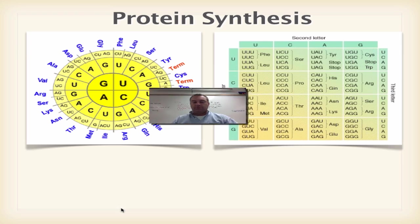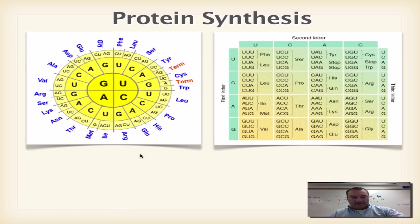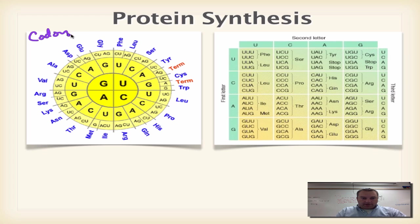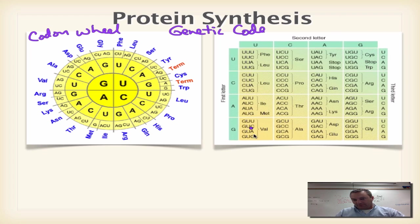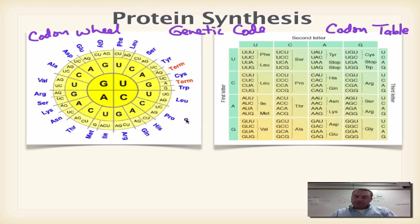What we have over here is what I like to call the codon wheel, but it's also referred to as the genetic code. Your textbook probably calls this the genetic code, but I like to call it the codon wheel. And then this one over here — the square — I like to call the codon table. They both do the exact same thing, and I'm going to teach you how to use both of them.